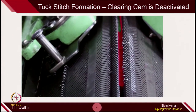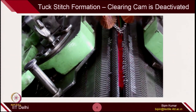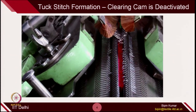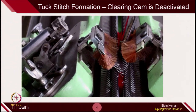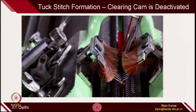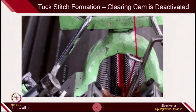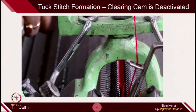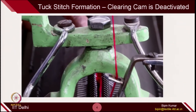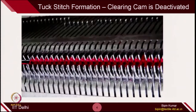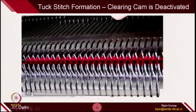Similarly, you have 4 clearing cam settings — 2 for each bed for the left-to-right direction and right-to-left direction. For the other carrier on the opposite bed, you have 2 cam settings. So there are a total of 4 cam settings available on the V-bed machine. The clearing cam position is where you can play to control the tuck stitches.